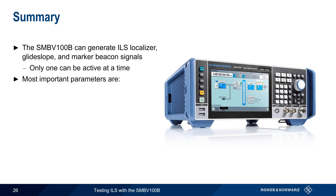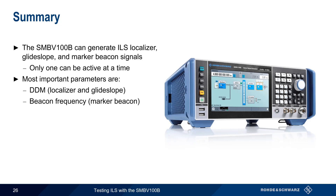The most important parameters when configuring ILS depend on the signal type. For localizer and glide slope, difference in depth of modulation (DDM) is the most important, since this provides the left-right or up-down guidance to the ILS receiver. For marker beacons, the beacon frequency and the associated pattern of dots and dashes are what distinguish between the different types of marker beacons.